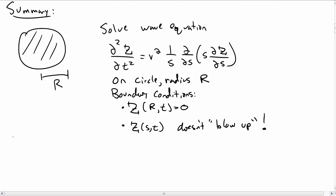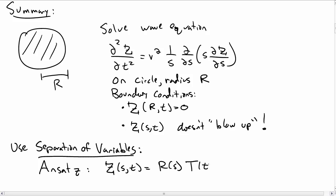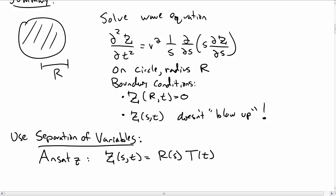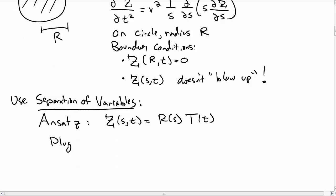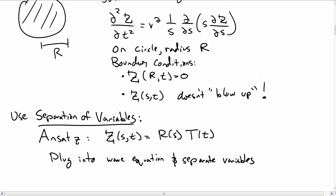We're going to solve this using the technique of separation of variables. The main technique is to first make an ansatz. We're going to say z as a function of s and t depends on s and on t through two functions r of s and t of t. We're going to plug this into the wave equation and separate this into two ordinary differential equations.